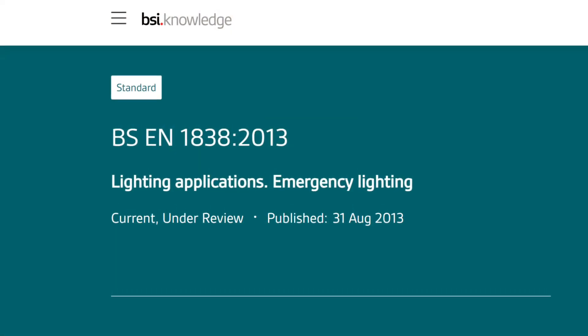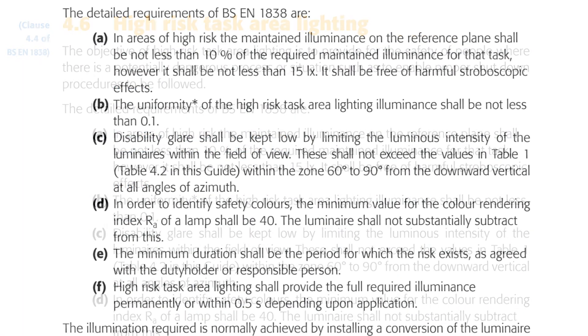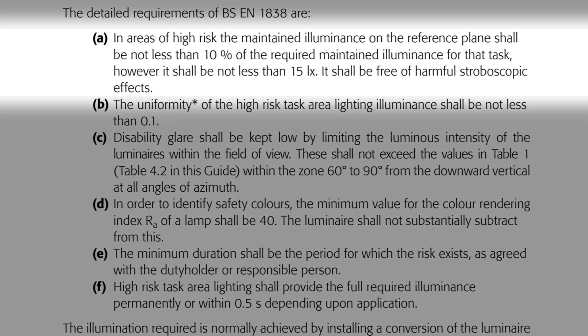If the risk assessment identifies areas that require high risk task area emergency lighting, those areas will need to comply with very specific requirements. These can be found in BS EN 1838 and are summarized under subheading 4.6 of the Electrician's Guide to Emergency Lighting. The first requirement states: in areas of high risk, the maintained illuminance on the reference plane shall be not less than 10% of the required maintained illuminance for that task, and shall be not less than 15 lux. It shall also be free of harmful stroboscopic effects.